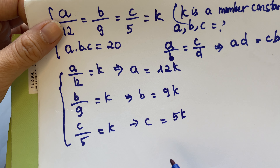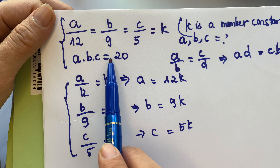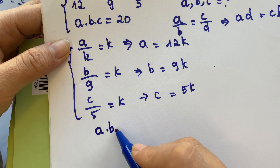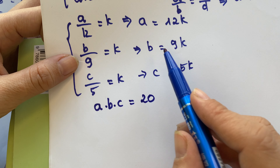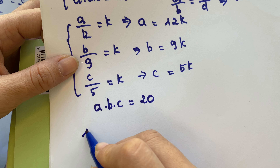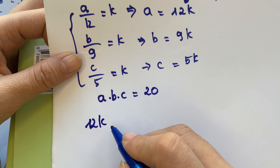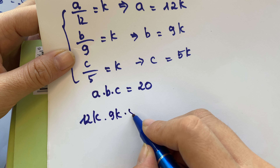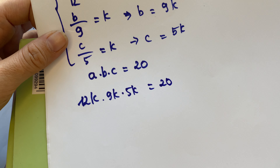Everyone look at that — a times b times c equals 20. So we have: a equals 12k, b equals 9k, and c equals 5k, and their product equals 20.